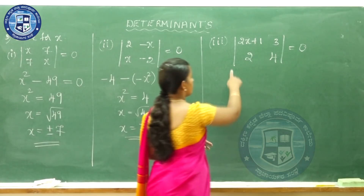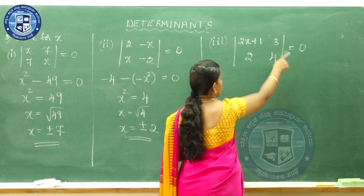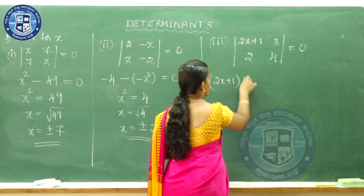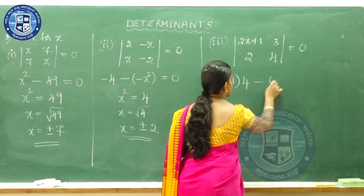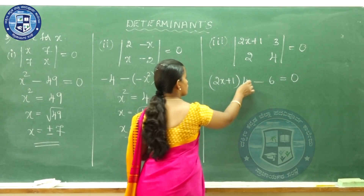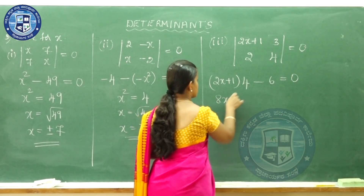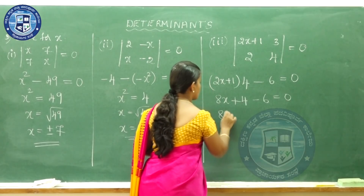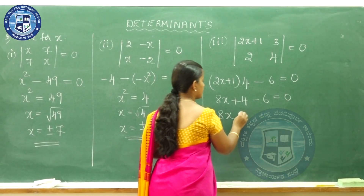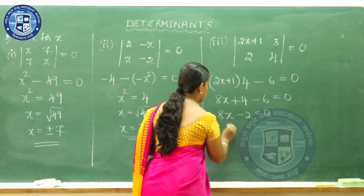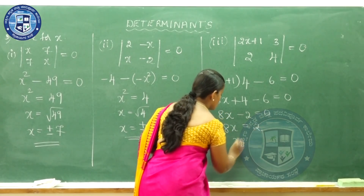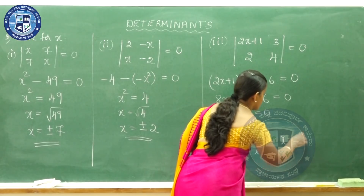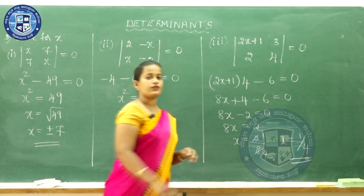Third question: determinant of [2x+1, 3; 2, 4] equals 0. So (2x+1) into 4 minus 2 into 3 equals 0. Multiplying: 8x + 4 minus 6 equals 0, so 8x minus 2 equals 0, therefore 8x equals 2. So x equals 2 by 8, which simplifies to x equals 1 by 4.